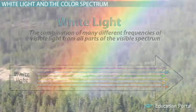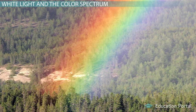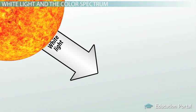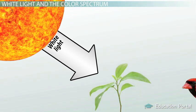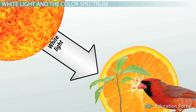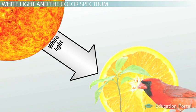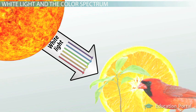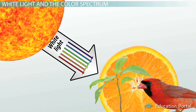White light is the combination of many different frequencies of visible light from all parts of the visible spectrum. The only way we can see these frequencies as separate colors is to separate them into a rainbow. So if sunlight is white light and sunlight reflects off of objects like plants and birds and oranges, then why don't we see those objects as white? It turns out that the different color frequencies are absorbed and reflected differently in every different object. Let's learn more about selective absorption and how it relates to color.